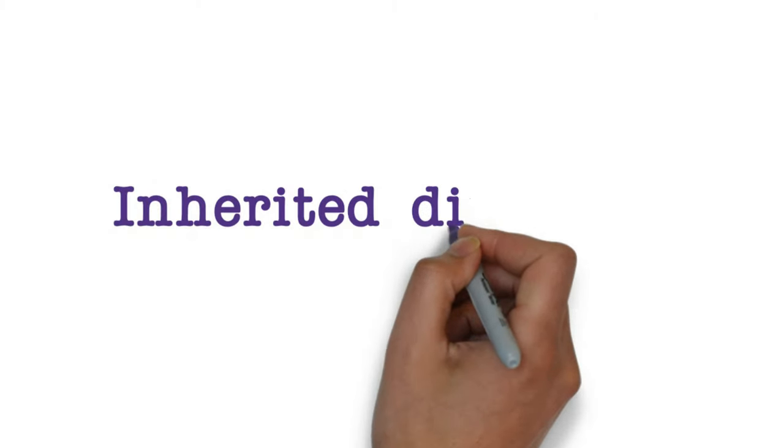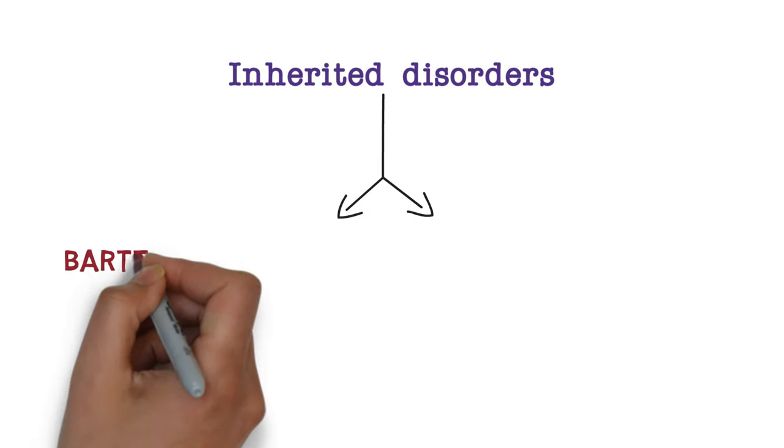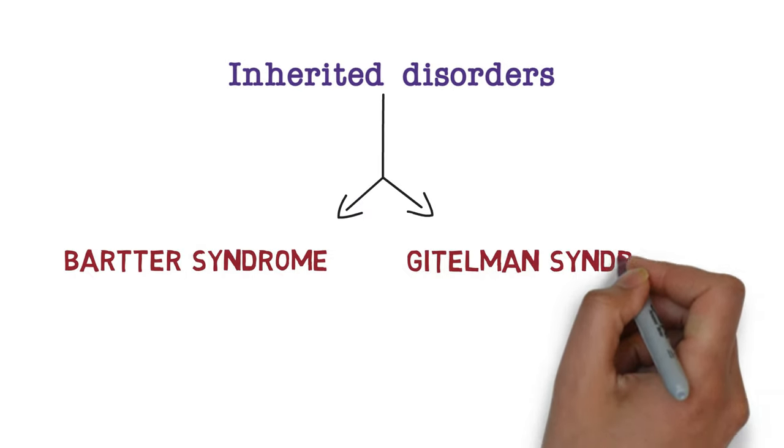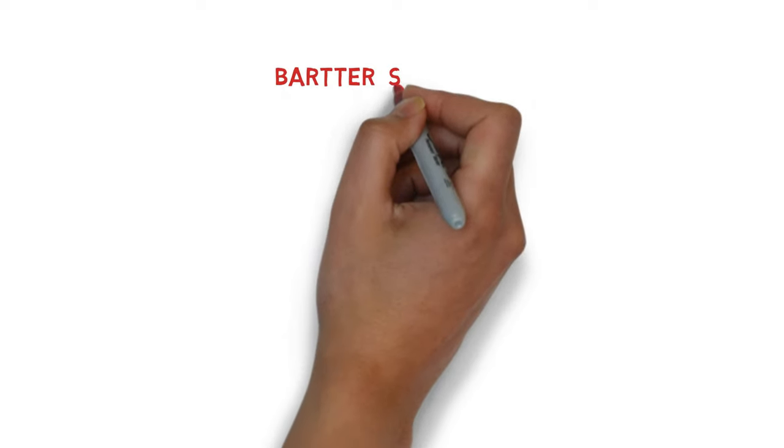In this video, we'll learn about inherited disorders like Bartter syndrome and Gitelman syndrome in a simplified way. So let's start with Bartter syndrome.